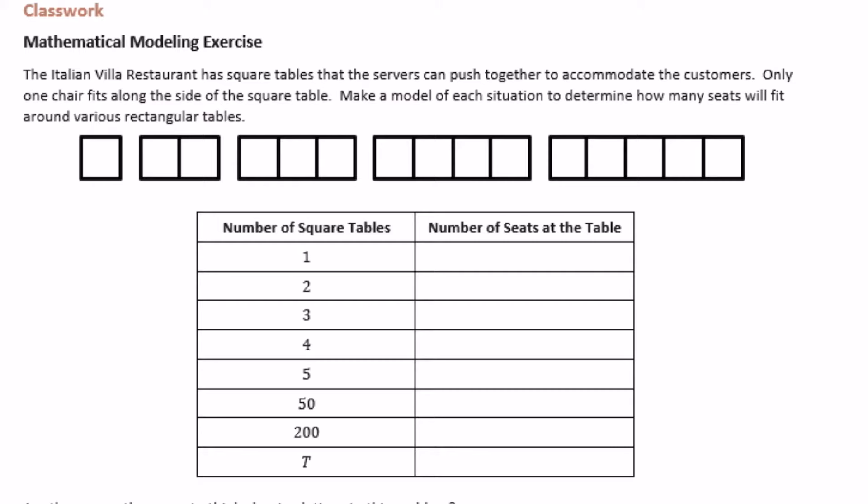The Italian Villa restaurant has square tables that the servers can push together to accommodate the customers. Only one chair fits along the side of the square table. Make a model of each situation to determine how many seats will fit around various rectangular tables. So they've shown us one table. With one table, how many seats can we fit at each table?